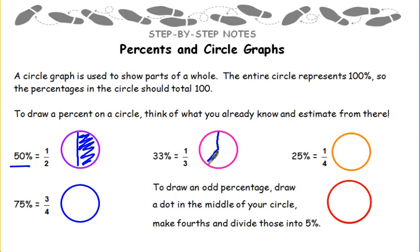33% is the same as 1 third. Draw your circle into thirds and go from there. 25% is 1 fourth and 75% is the same as 3 fourths.